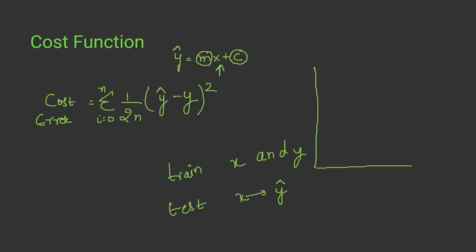We compare the predicted value with the actual value. We split the data into training and test sets: x train and y train are used during training, while x test values are not seen by the model during training. At test time, the model is given x test values, it predicts y predicted, and we compare that with y test values to measure accuracy.